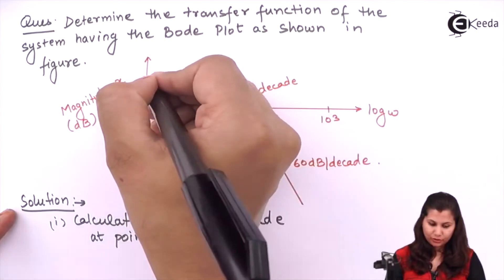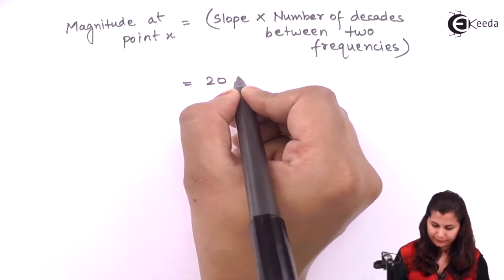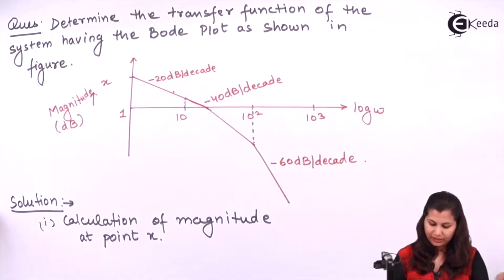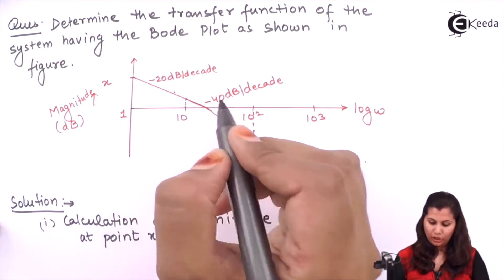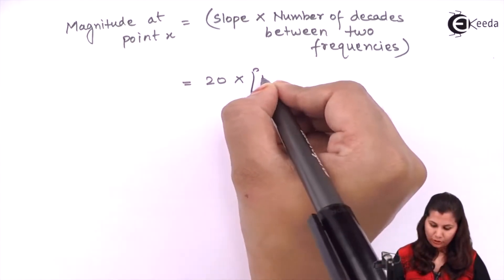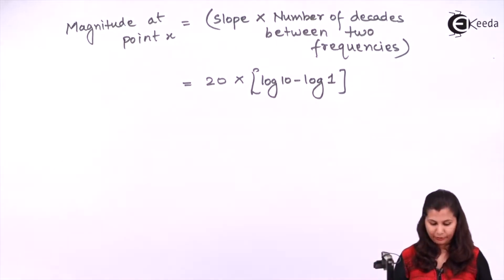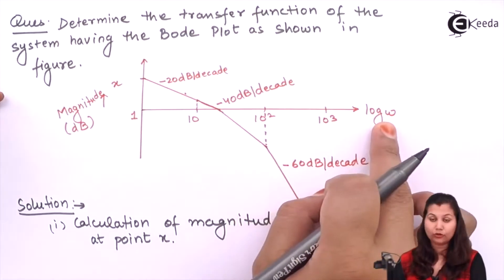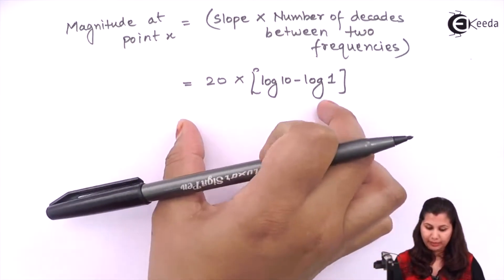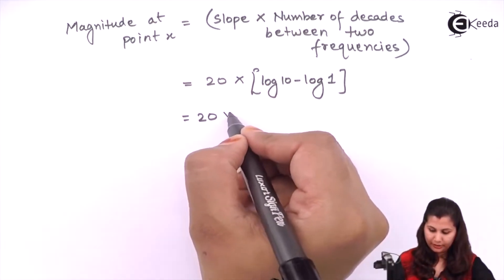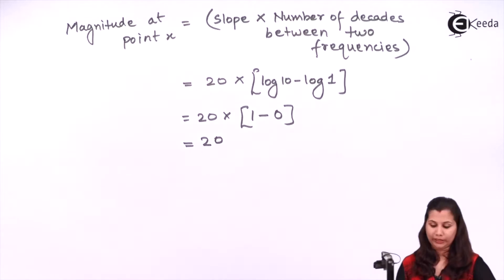At point x the slope is minus 20 dB per decade. The number of decades between the two frequencies is log 10 minus log 1, since the x-axis is a logarithmic graph. So the magnitude equals 20 into (1 minus 0), which gives a magnitude of 20 at point x.